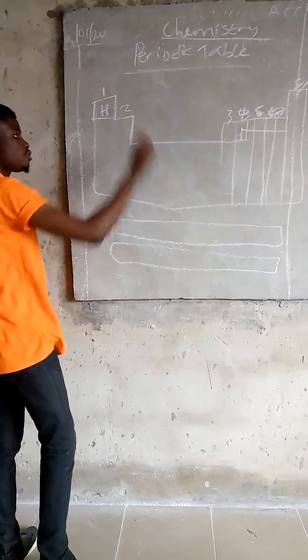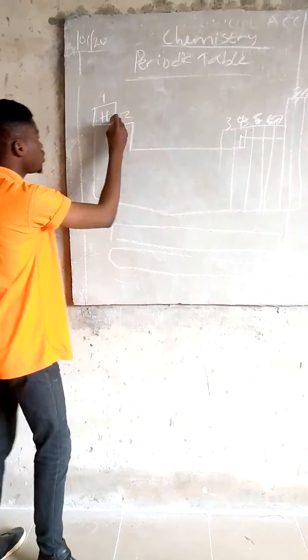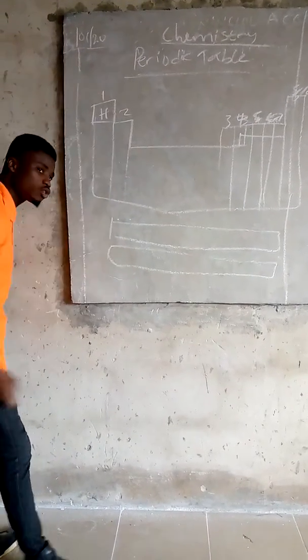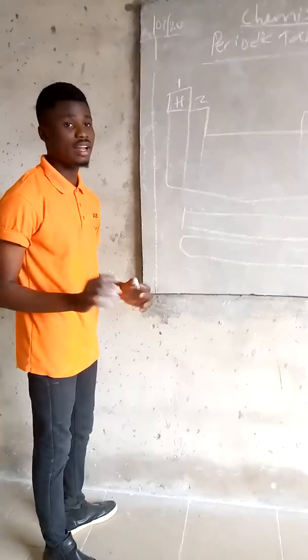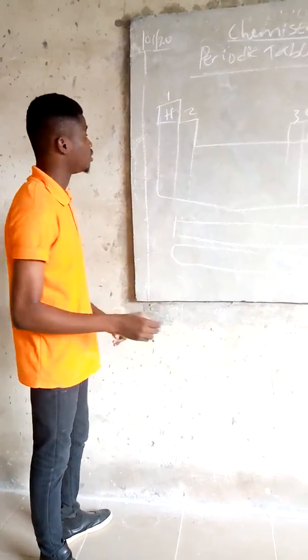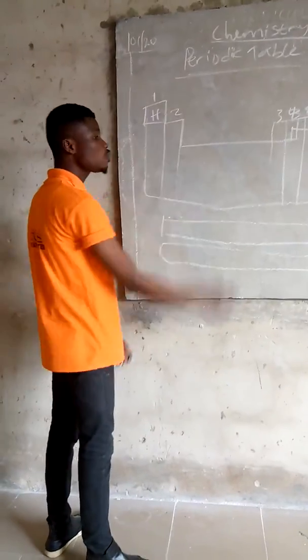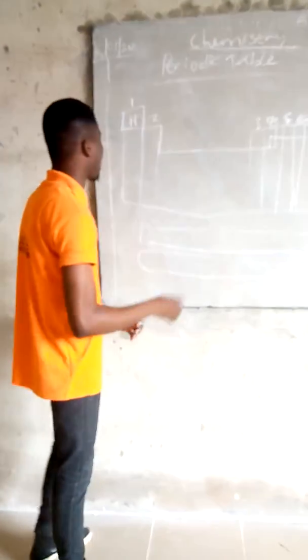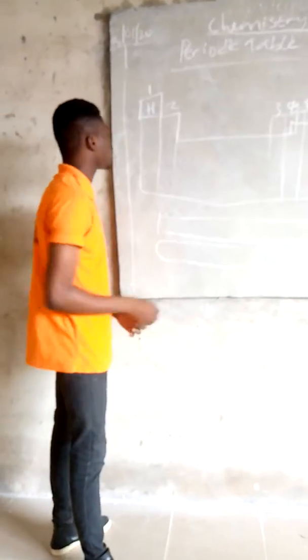In Group 1 we have hydrogen. Hydrogen has one electron, so all the elements in Group 1 are univalent, meaning they have one electron in the outermost shell. Group 2 elements are all divalent because they have two electrons in the outermost shell.